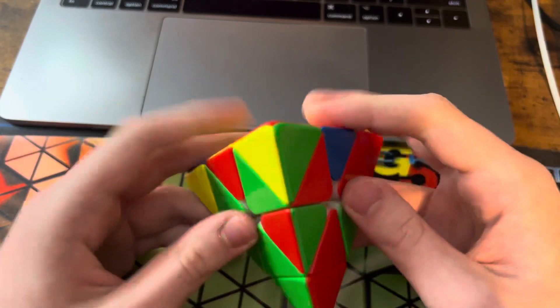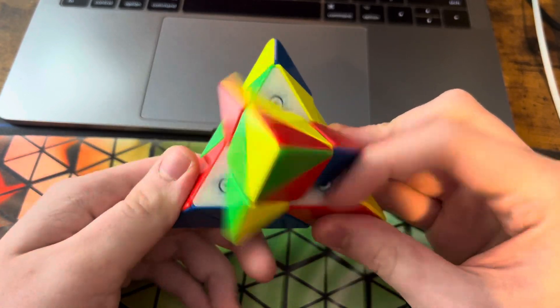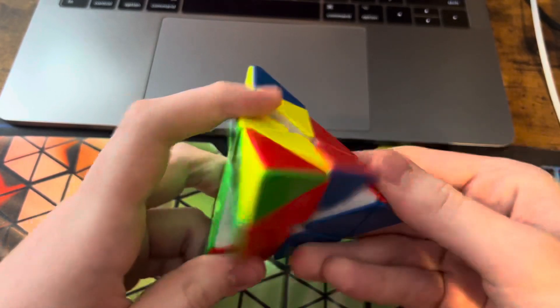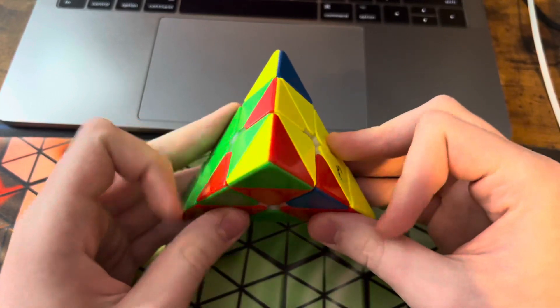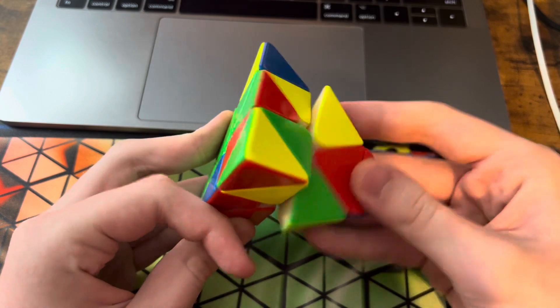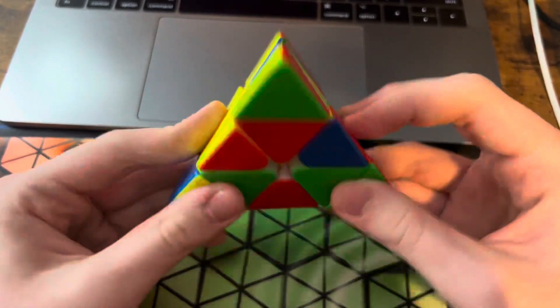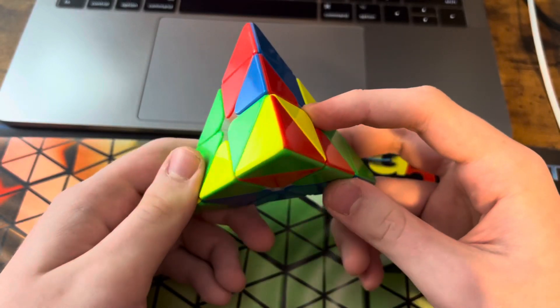And rotate to here, do the L4E, which I did like that. It's an alternate ALG for this case that gets rid of both AUFs. And I like it a little bit more than the standard ALG like that, just because I find that I lock up a lot on the standard ALG.